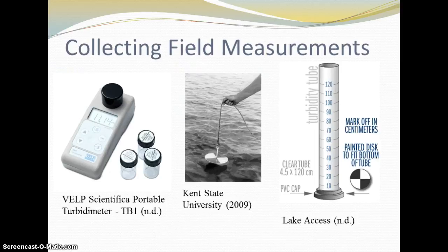Turbidity is collected in the field through various methods such as a turbidimeter, Secchi disk, or transparency tube. Water samples can also be shipped to a laboratory to test for turbidity. Turbidimeters measure refracted light. For representativeness of the actual sample water, rinse the vial three times with sample water prior to collecting the sample. Then rinse with distilled water after analysis to remove contamination from the vial.